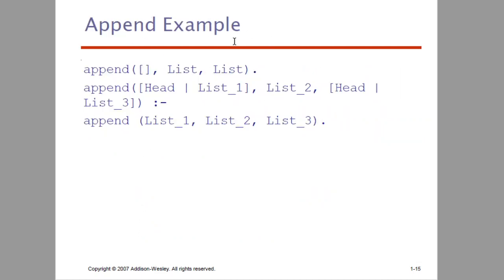Next, we have an append example. Append is mainly used for concatenation. We have an empty list, a list, and another list — then all the list is the append operation. That is the head of list1, list2, and head of list3. It is an inferencing rule. Append of list1, list2, list3 — here we have three elements. List1 and list2 are appended to give list3. That is the append example.